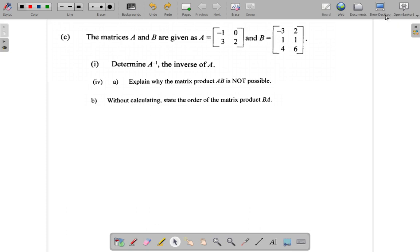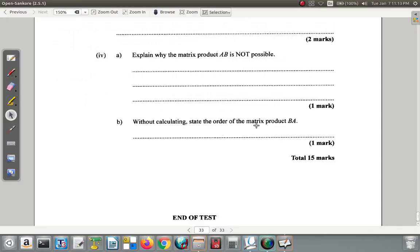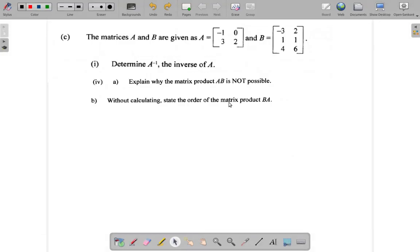Then it says: without calculating, state the order of the product BA. Alright, BA. If you should multiply B by A.